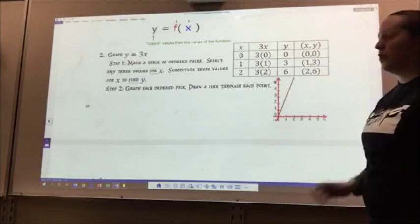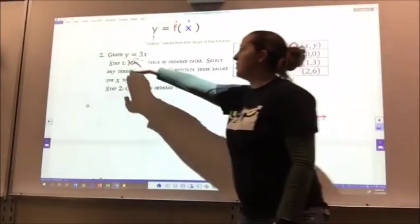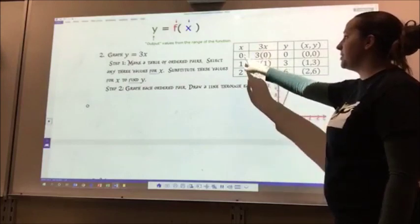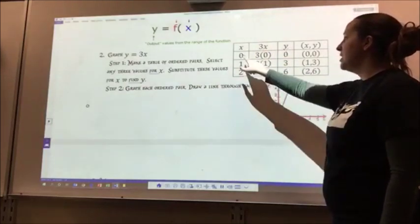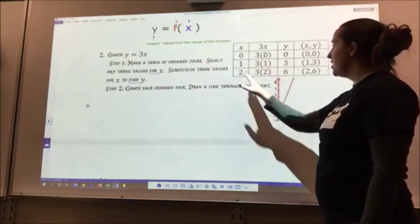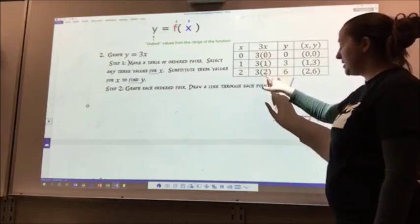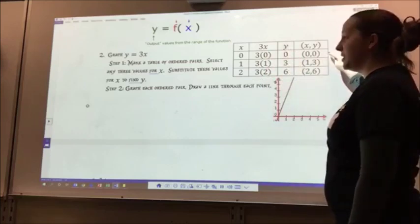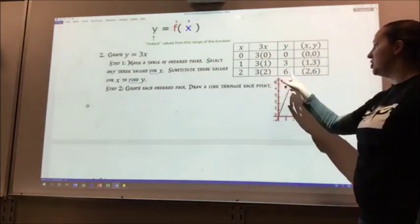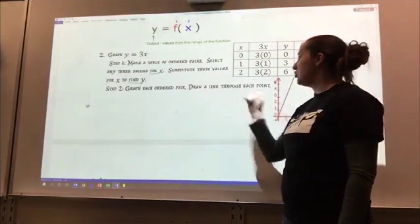Step 1, I made a table of ordered pairs. Here is my x values, here is my y values. Here is my equation, y equals 3x. I multiplied each of my values of x to get my y values. 0, 3 times 0 gives me 0. 1, 3 times 1 gives me 3. 2, 3 times 2 gives me 6. So these are my x values and these are my y values, so that I made them into points. 0, 0 is my first point. 1, 3 is my second point, and 2, 6 is my third point. Next, I graph each ordered pair. I draw a line for each point.